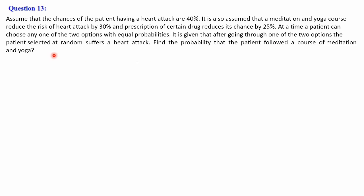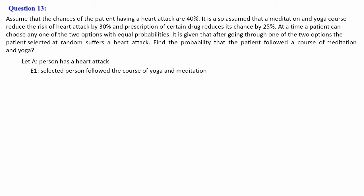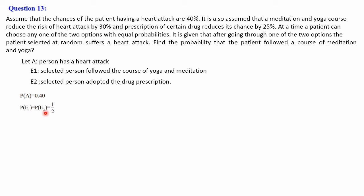Let A be the event that a person suffers a heart attack. E1 means the selected person is doing yoga and meditation, and E2 means the selected person is using drugs. P(A) = 0.40, meaning 40% chance of heart attack. Since a patient can choose either option with equal probability, P(E1) = P(E2) = 1/2.